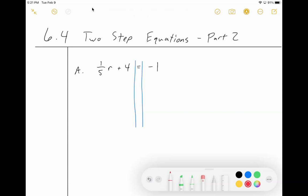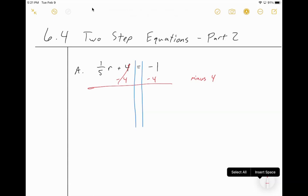First thing I'm going to do is I see I have a plus 4, so I want to get rid of the plus 4. The 4 is farther away here, so I'm going to do minus 4 on both sides. That's going to cancel out the plus 4 and the minus 4. Negative 1 minus 4 is negative 5.